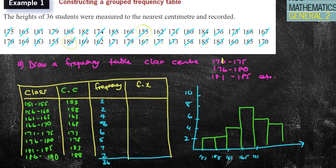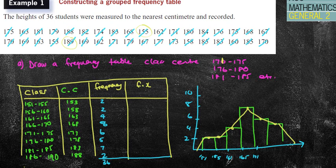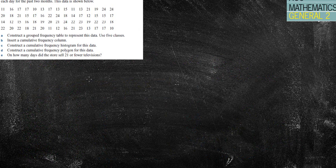For the polygon part, I'd put the dots in the center of each bar and join the dots, starting and finishing at the baseline. Doing it on screen is a bit more challenging without a ruler. The next question asks us to construct a grouped frequency table to represent the data using five classes.